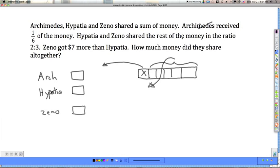We have some information about how to split that up. Hypatia and Zeno shared the rest of the money in the ratio of 2 to 3. Well, that's pretty easy to do because in this case, I've got just 5 units, 2 and 3. So Hypatia gets 2, and Zeno gets 3.